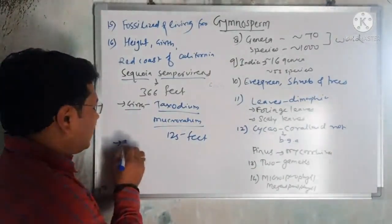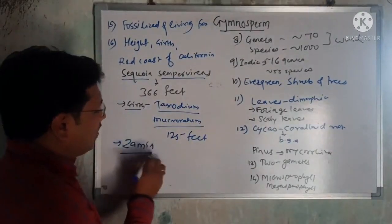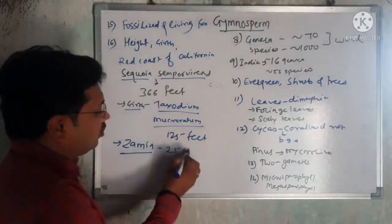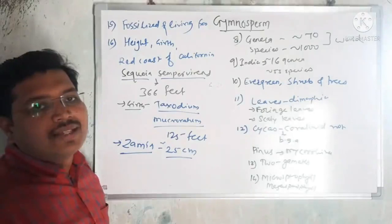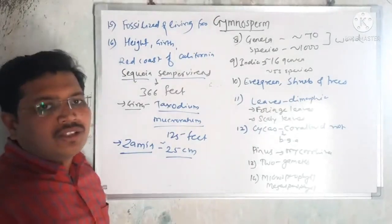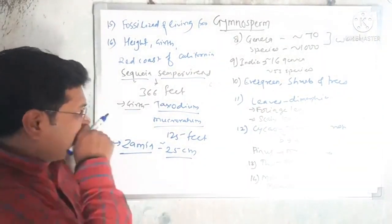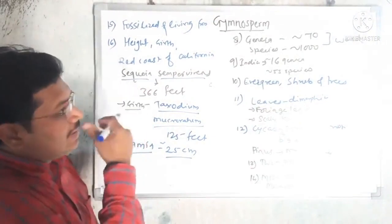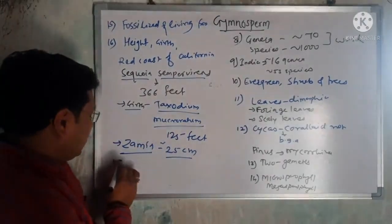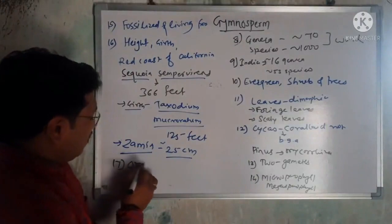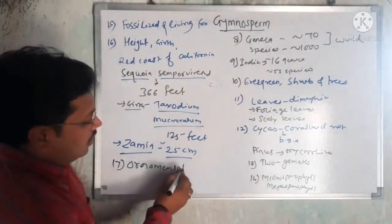There is another gymnosperm called Zamia, which is only approximately 25 centimeters in height. It can be considered the smallest gymnosperm. So we have seen some examples of gymnosperms ranging from the tallest to the smallest.